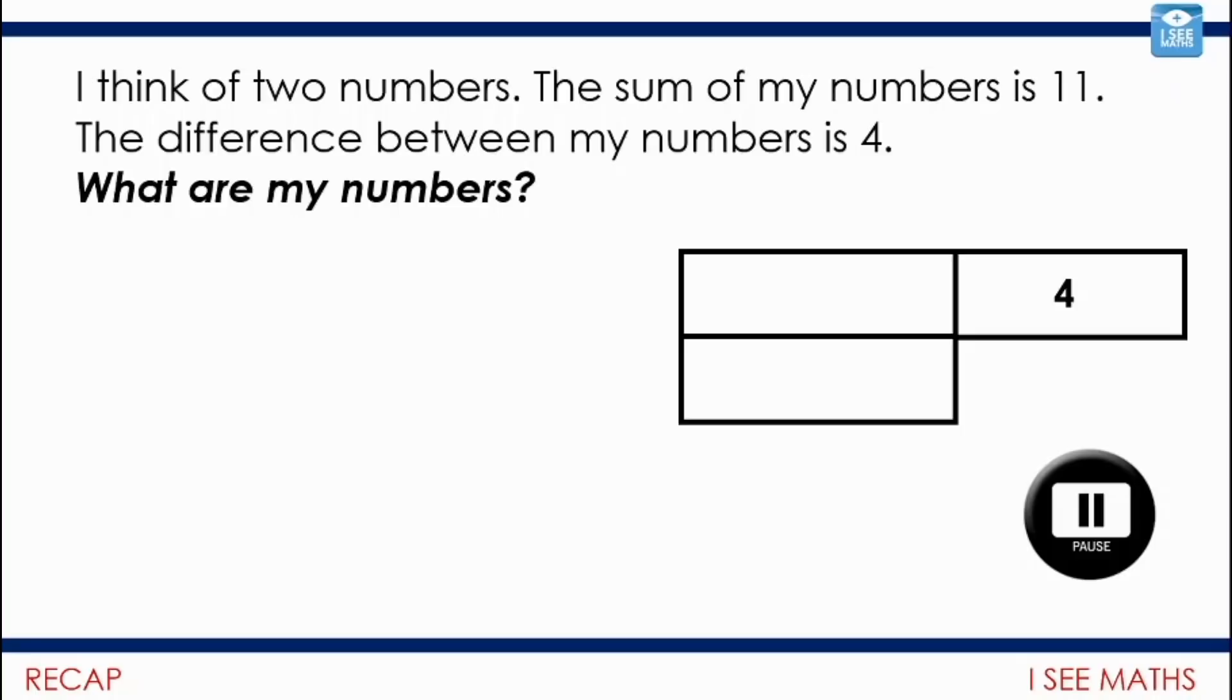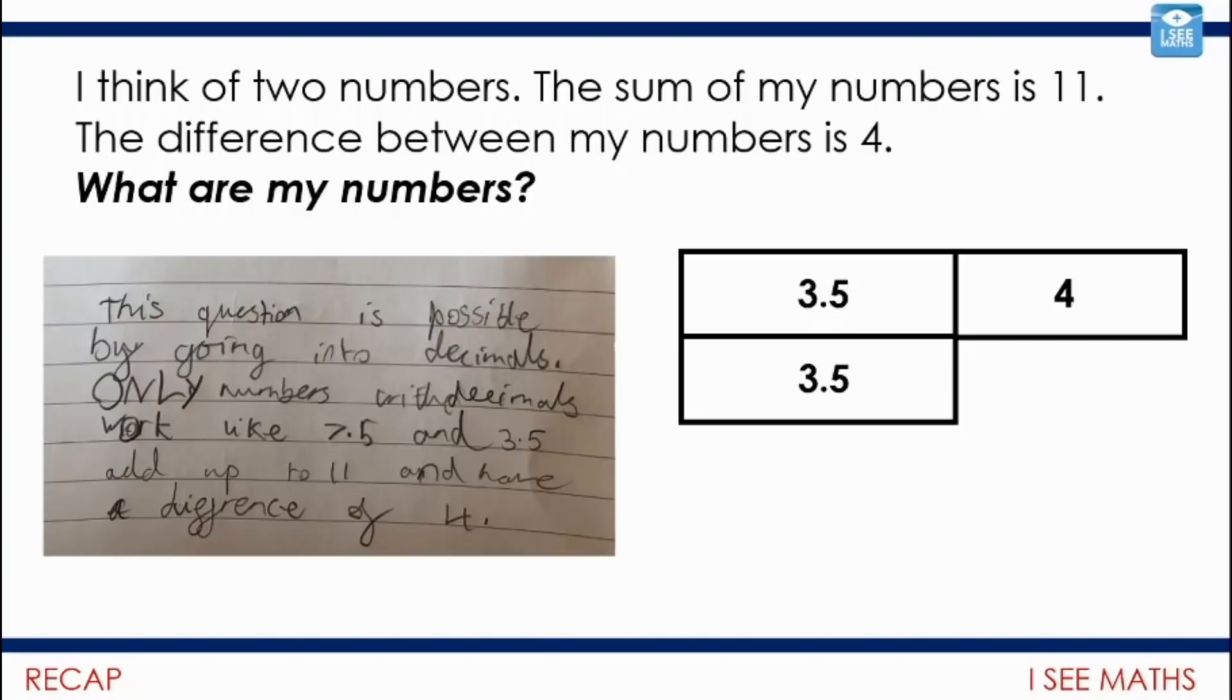Let's have a look. If the sum of my numbers is 11 and I take away that difference of four, that will leave me with seven, an odd number. When I divide that odd number by those two sections, it will be 3.5 each. So my answers will be 7.5 and 3.5. I love this explanation: this question is possible by going into decimals. Only numbers with decimals work, like 7.5 and 3.5 add up to 11 and have a difference of four. Fantastic.